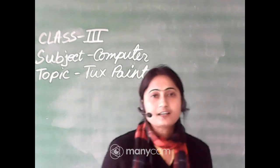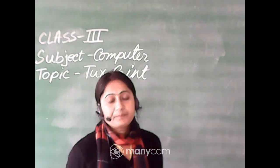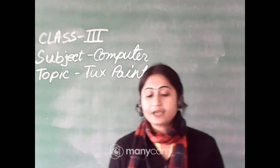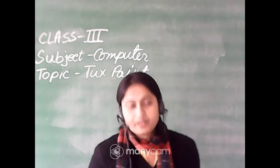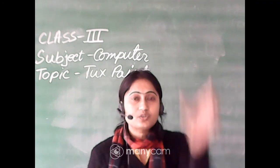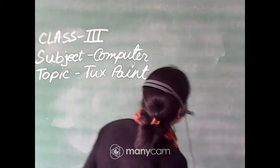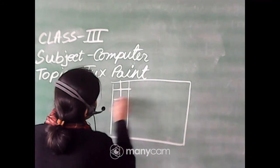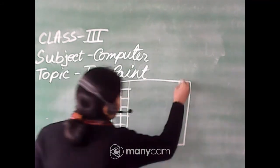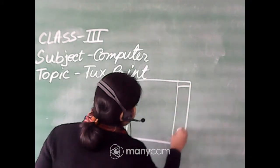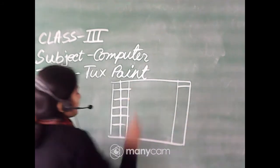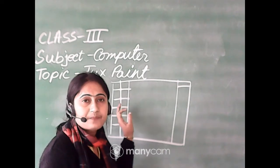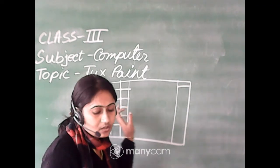But in Tux Paint, how do you save your picture? Suppose you have drawn a beautiful scenery and you want to save it. The save tool is present in the toolbox. If this is the Tux Paint window — on the left side are the tools in the tool bar, and on the right side there are the selectors. From the toolbox you have to select the save tool.